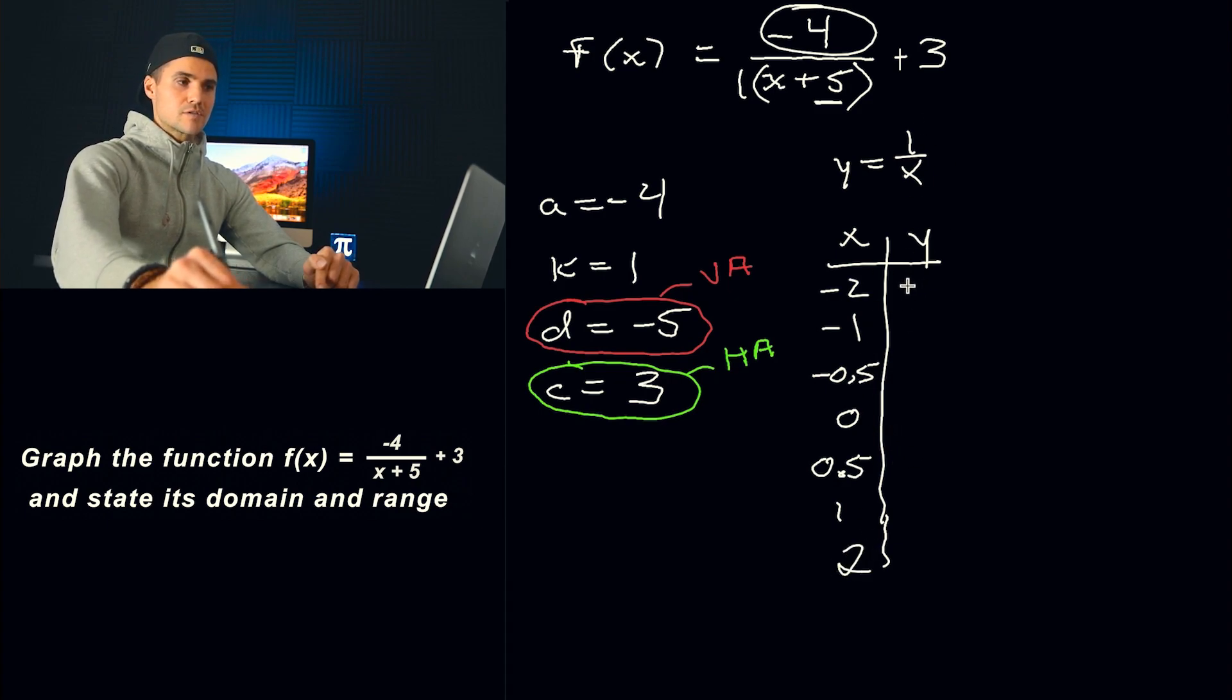The corresponding y values, 1 over negative 2, negative 0.5, negative 1, negative 2. Now at 0, on the parent function, we know there's a vertical asymptote. And then at an x value of 0.5, we've got a y value of 2, 1. So that's the parent function.